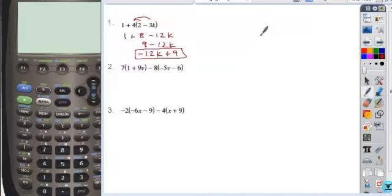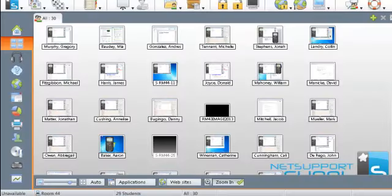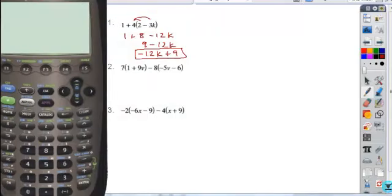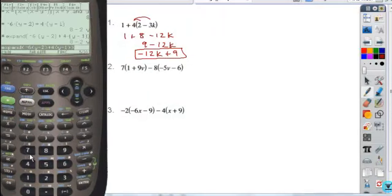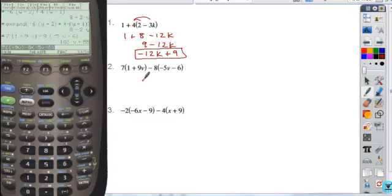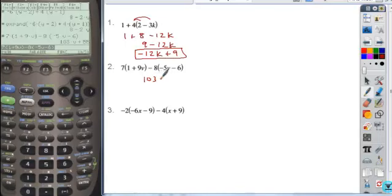All right. As we go through this, you can just enter it exactly as it appears. So, 7 times the quantity 1 plus 9v, to get my v, alpha, the alpha key, and then 0. Close the parentheses. Minus 8 times the quantity negative 5v minus 6. Hit enter, and I get my expression. It's already in the order that I want it. 103v plus 55 is my answer.